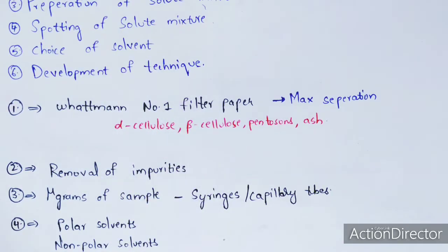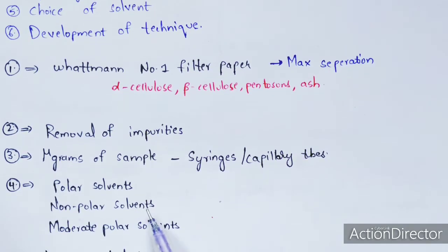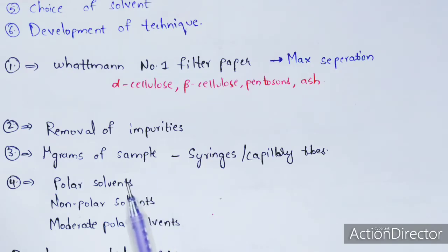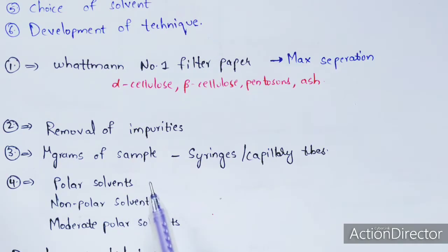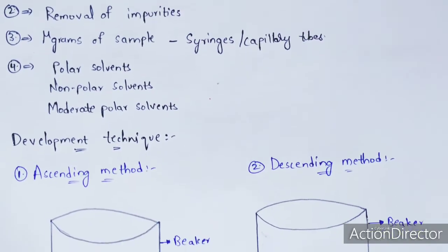For choice of solvent: three types of solvents can be used — polar solvents, non-polar solvents, and moderately polar solvents. The solvent is the mobile phase. The type of solvent used depends upon the type of sample being analyzed.